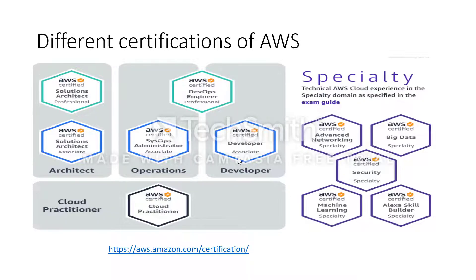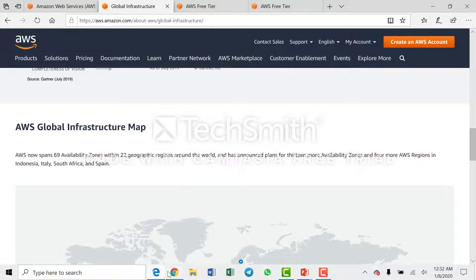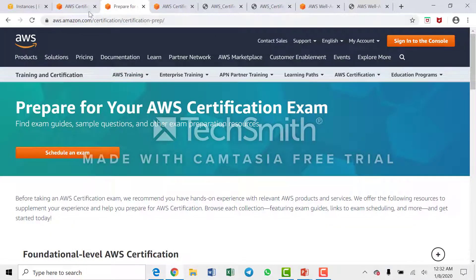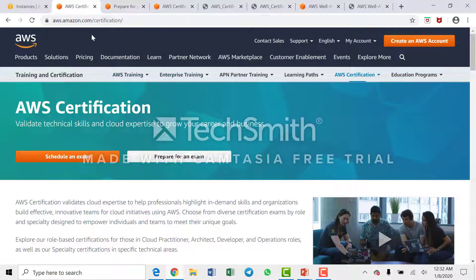AWS has many certifications and you can follow different paths — the architect path, the operations or developer path, and specialty exams. On the AWS education website you can schedule an exam or prepare for an exam. You can see the available certifications there.